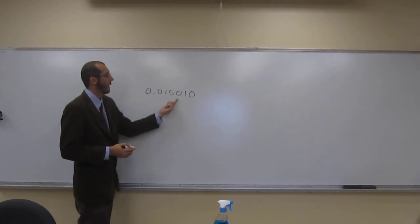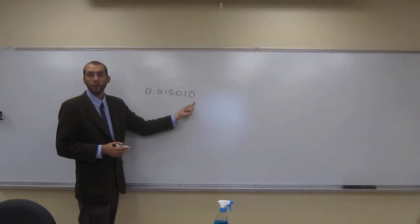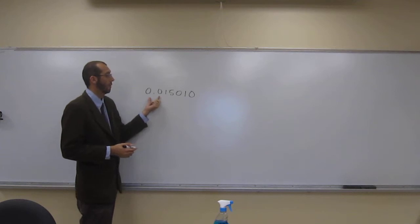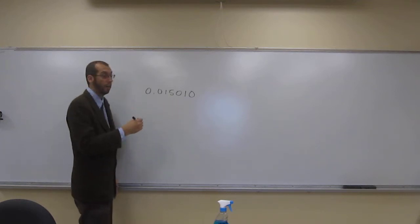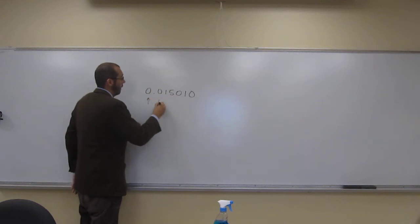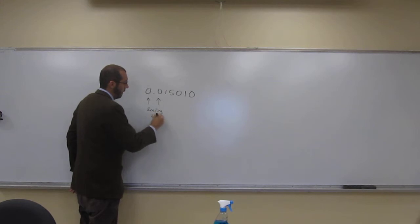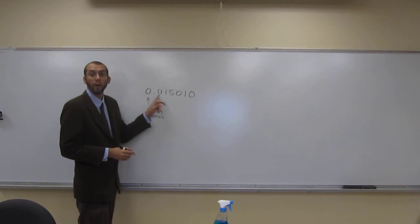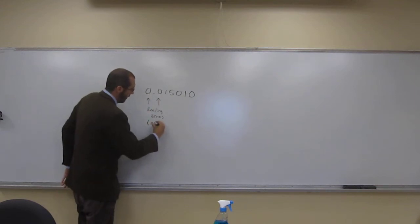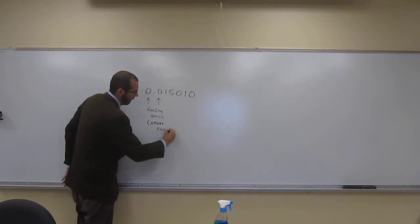If we see we've got three different types of zeros in this number. We've got these two which are before any non-zero digit. Those kind we call leading zeros. So it doesn't matter if they're before or after the decimal place. If they're leading, they're never significant.